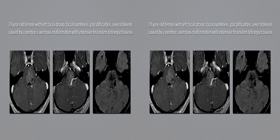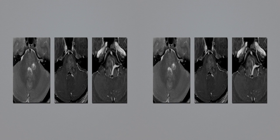The magnetic resonance imaging demonstrates the classic appearance of a cavernous malformation located eccentric to the left side in the dorsal pons, with significant telangiectasias present throughout the pons, as well as a large developmental venous anomaly.